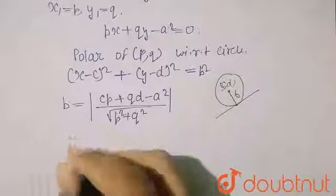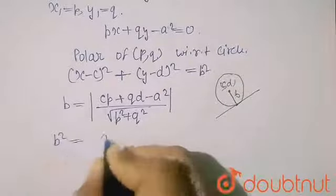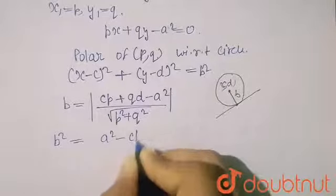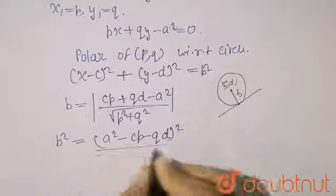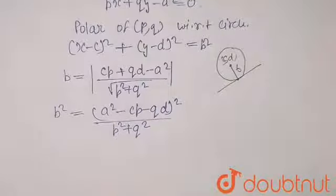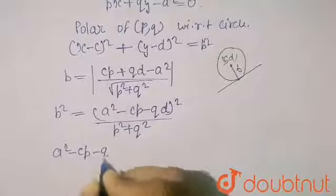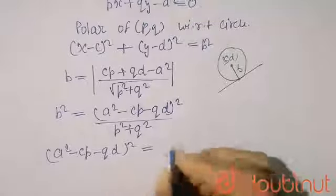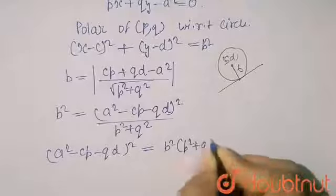So now I am squaring both the sides. So my B² will be equal to A² - CP - QD and it is whole square upon P² + Q². So cross multiply. So (A² - CP - QD)² will be equal to B² and here P² + Q².